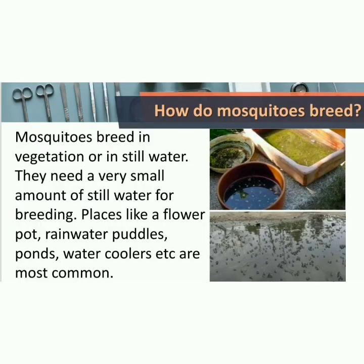It is very important to understand how mosquitoes breed. Mosquitoes breed in vegetation or in still water. They need a very small amount of still water for breeding. Places like a flower pot, rain water puddles, ponds, water coolers, etc. are most common for breeding of mosquitoes.